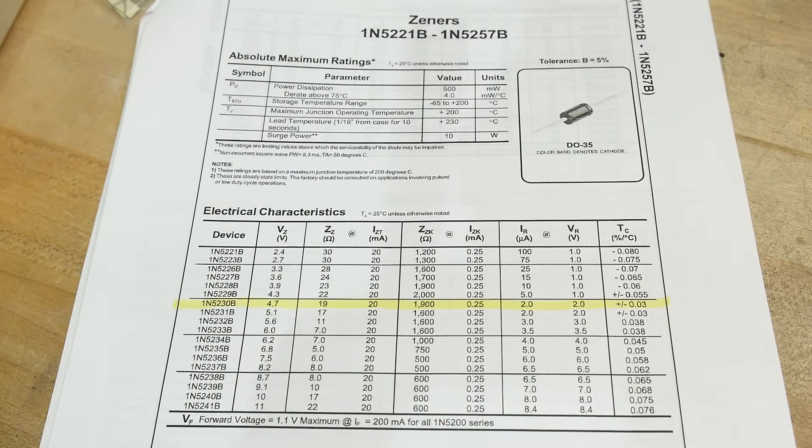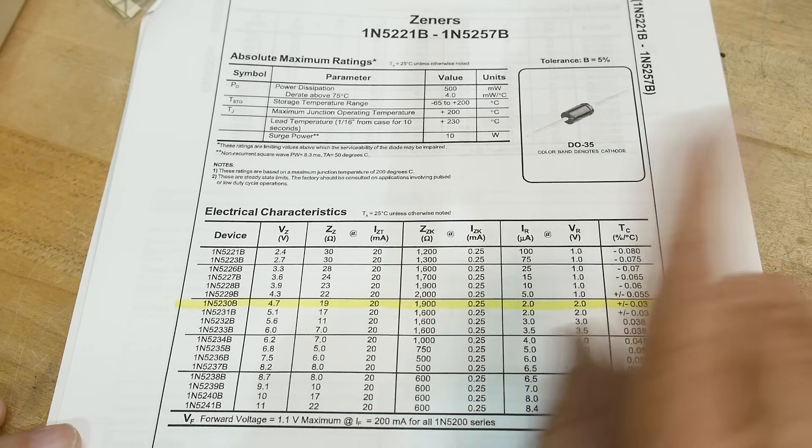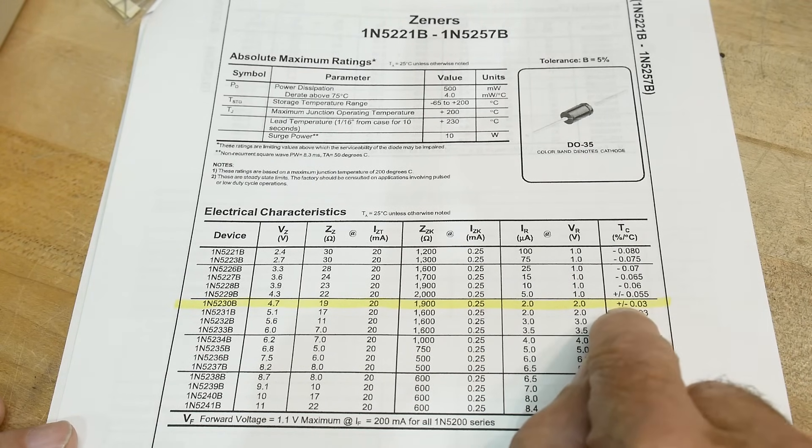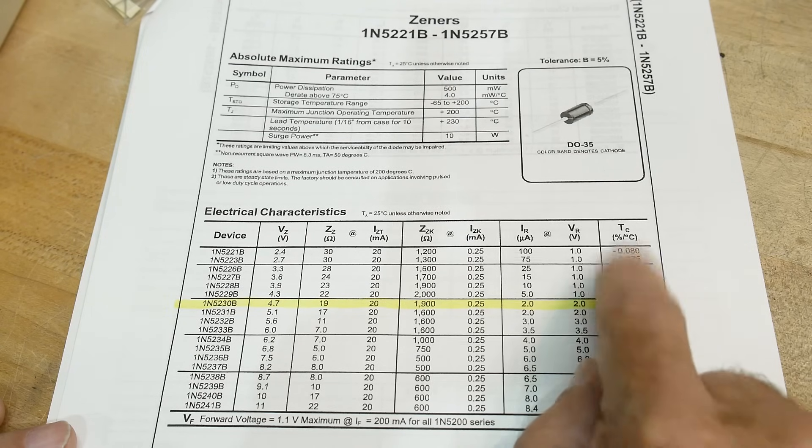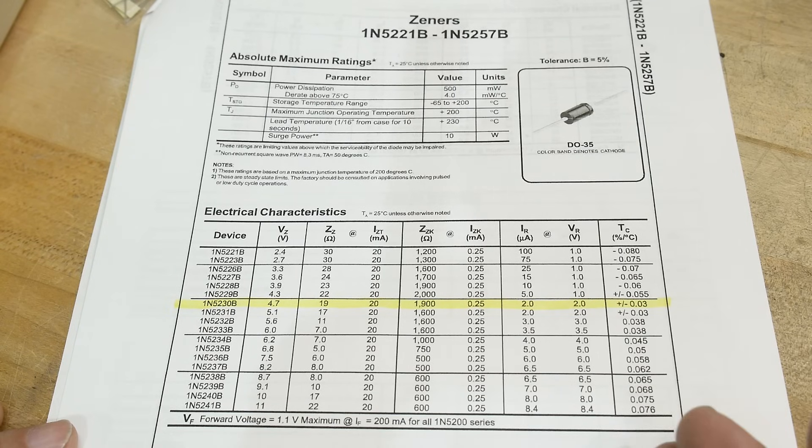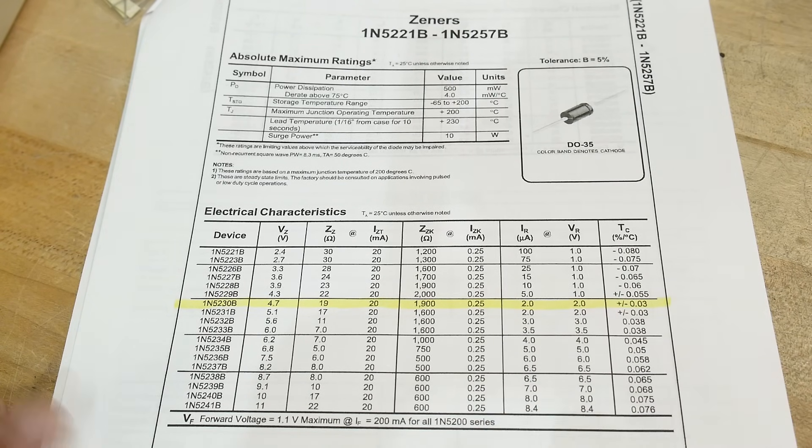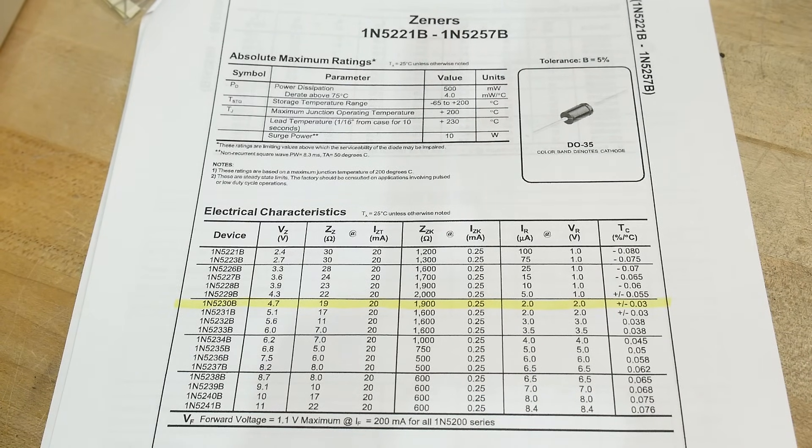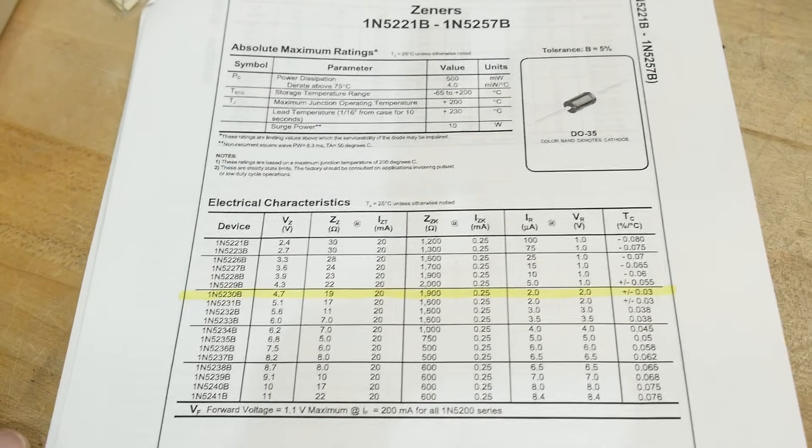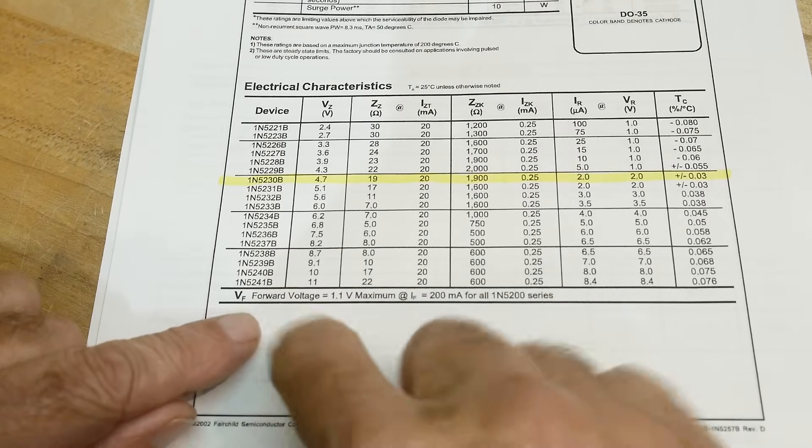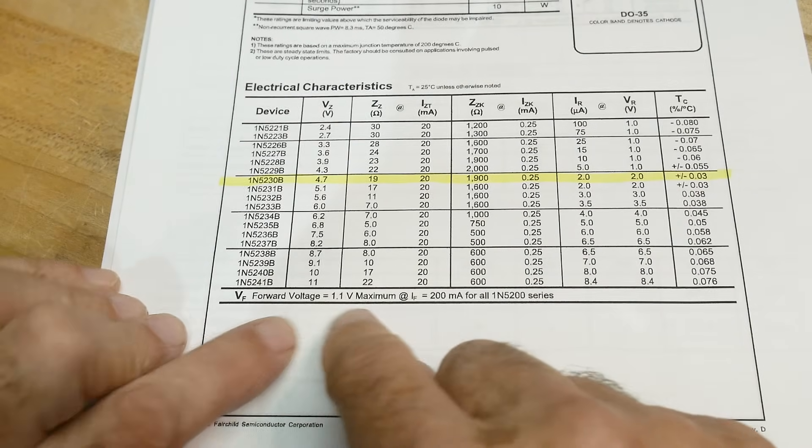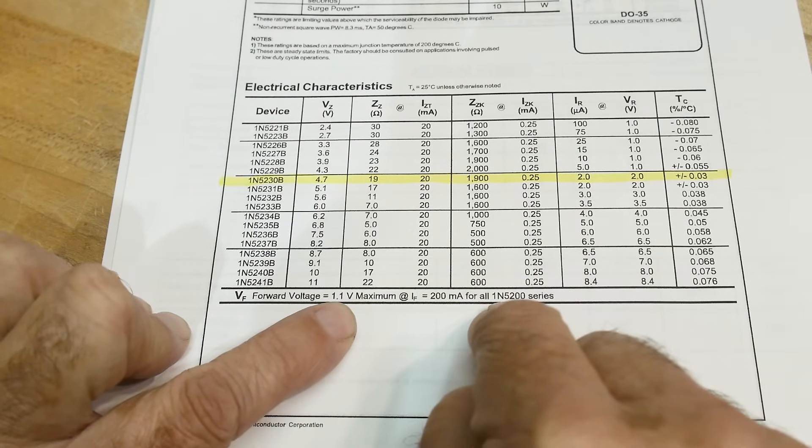All right, so let's take a look at all those things. And then there's a delta temperature. How far does the voltage move with a change in temperature? And it's 0.03 percent per degree C. All right, so if you have a 10 degree shift, then it's 0.3 percent change in voltage. And then it also gives, way down here, almost missed it, the forward voltage. That's using the diode like a real diode in the forward direction. It says it's a maximum of 1.1 volts at 200 milliamps. Okay.